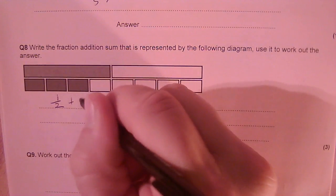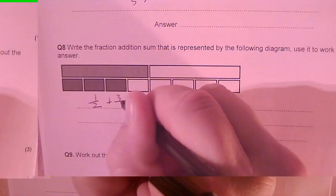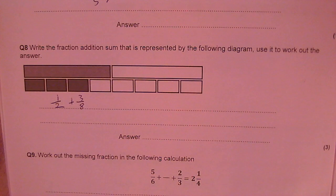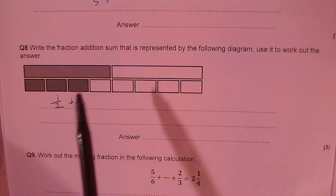Plus three eighths, and use it to work out the answer. So a half is shaded in, plus three eighths is shaded in.